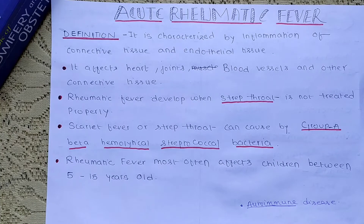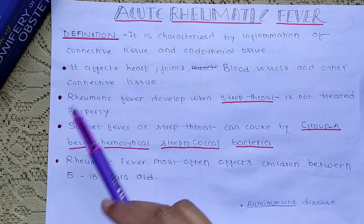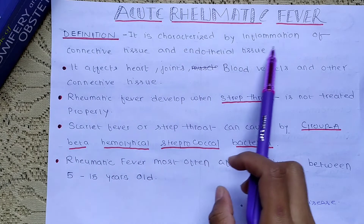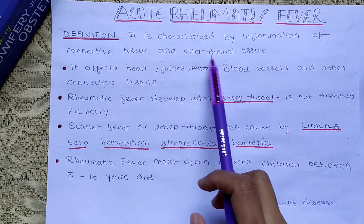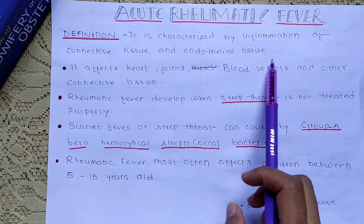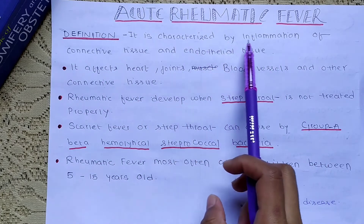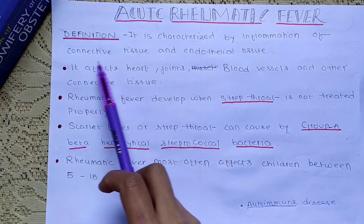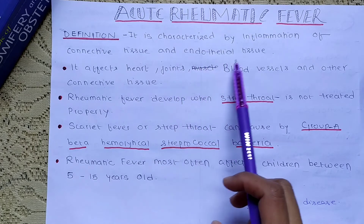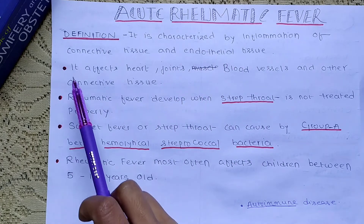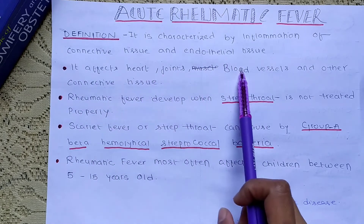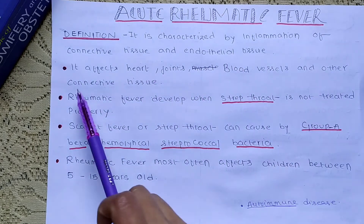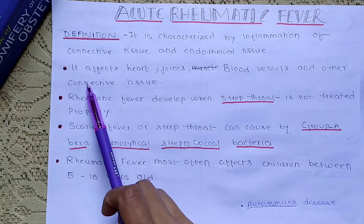Today our topic is acute rheumatic fever. It is characterized by inflammation of connective tissue and endothelial tissue. It affects heart, joints, blood vessels, and other connective tissue.